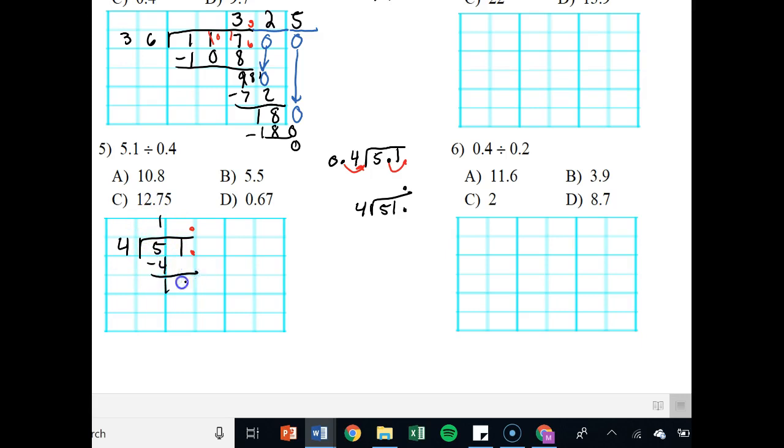So 4 goes into 5 one time. That's 4. You got 11 left over because we dropped down the 1. And 4 goes into 11 two times. That's 8. You have 11 minus 8 is 3 left over, so we add a zero. Bring it on down. 4 goes into 30 seven times because that's 28. You have 30 minus 28 is 2 left over, so that means I add another zero. Bring it on down. And 4 goes into 20 five times. Now I know I'm finally done because I have zero left over. So 12.75. That's my answer.